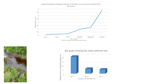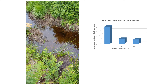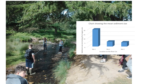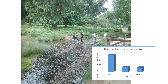In graph form we can see quite clearly that the speed of the river — the velocity — speeds up as you move downstream. Looking at the sediment size graph, far more easily in graph form, you can see that the size of the sediment does get smaller. Photos are also useful to refer back to: here's site one, site two, and site three.